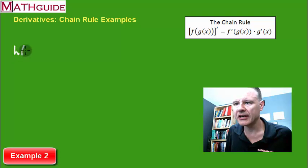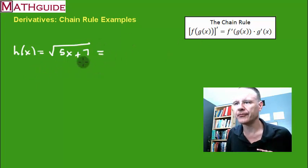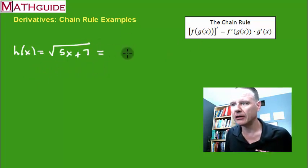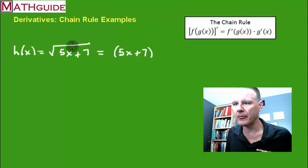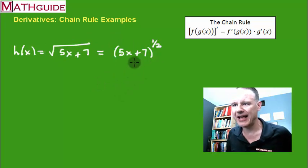Here's our second example. If I have h of x equals the square root of the quantity 5x plus 7, I'm going to use the chain rule. Before we actually start the problem, I'm going to think of this as an exponent. The square root is the same thing as the half power, because now I can use the power rule.